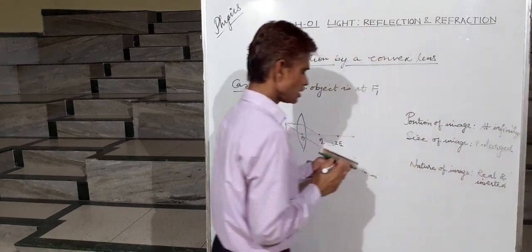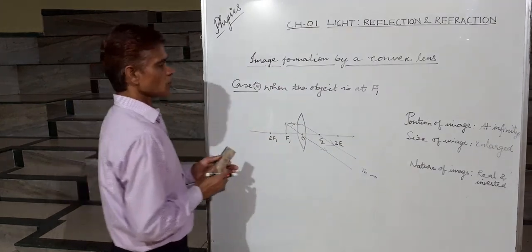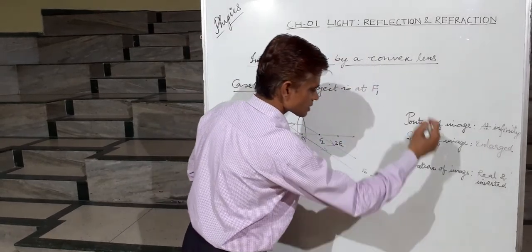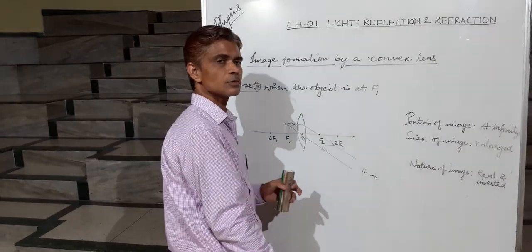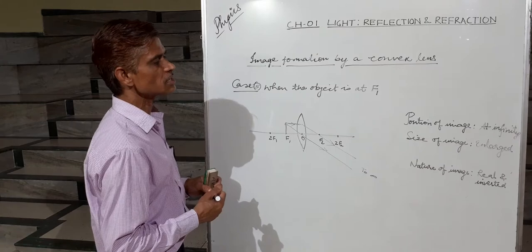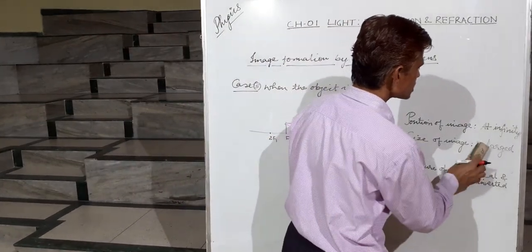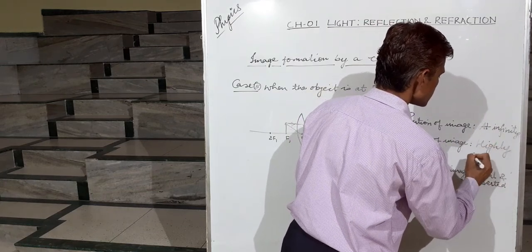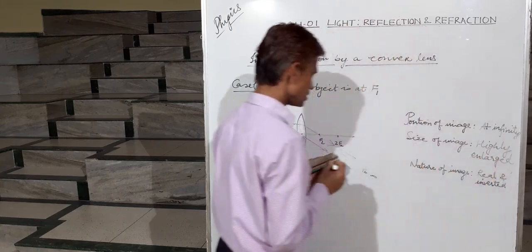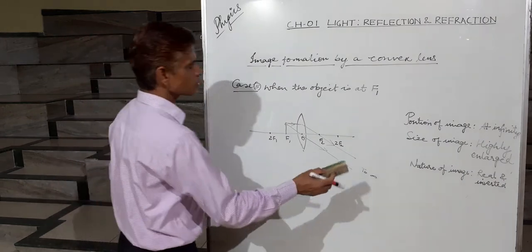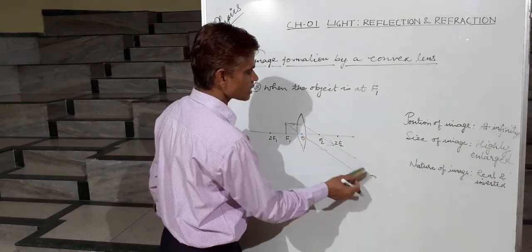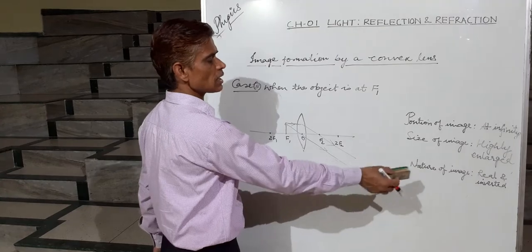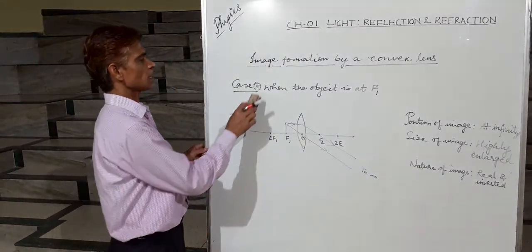Since these rays meet at infinity, the image is highly enlarged. The refracted rays are real and the image is formed below the principal axis, so a real and inverted image is formed.